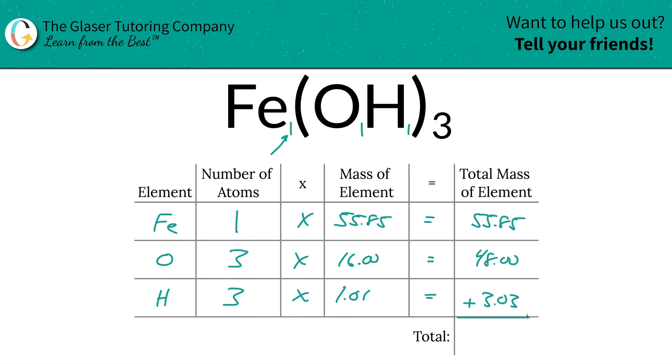To find then the entire mass of the entire compound, which is really what we're looking for, we're going to sum this particular column on up. So this is 106.88. Since we're solving for molar mass, the units here are in terms of grams per mole.